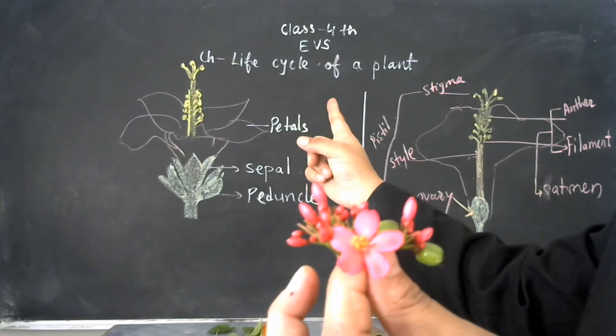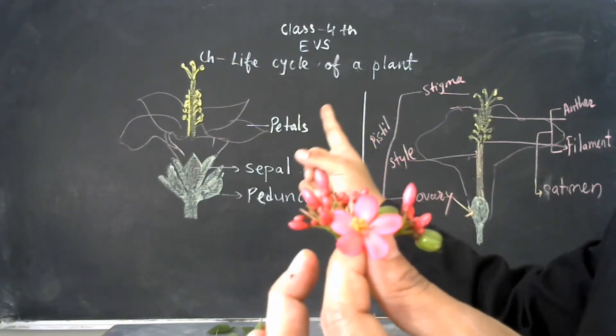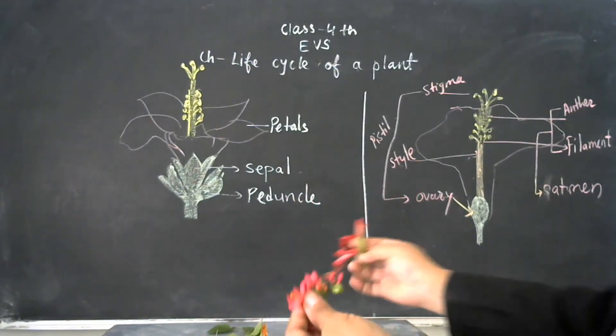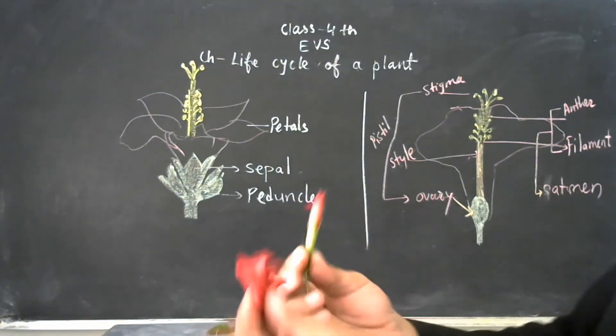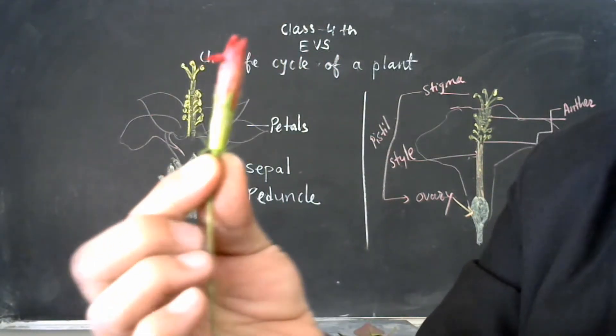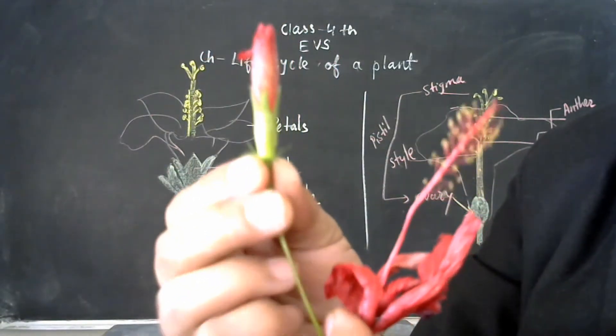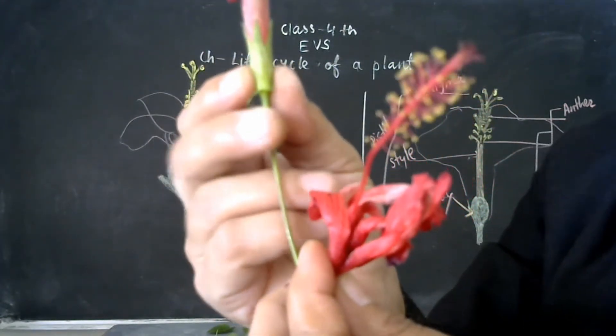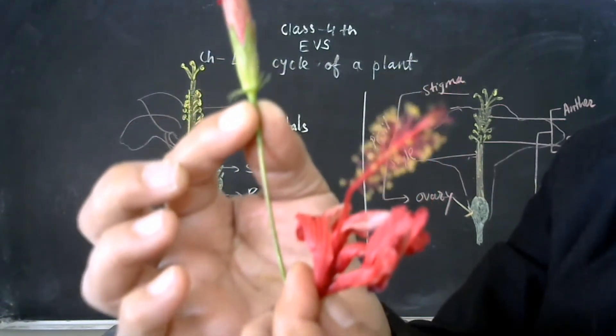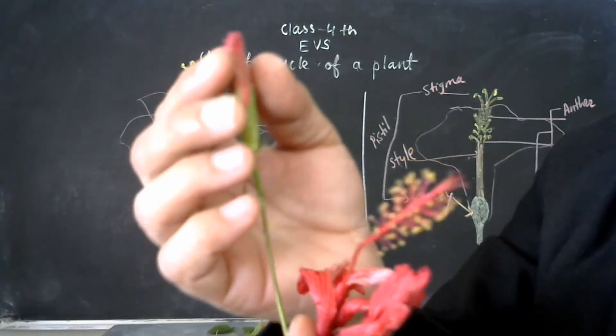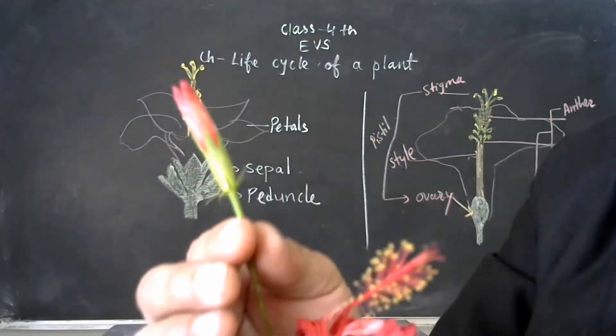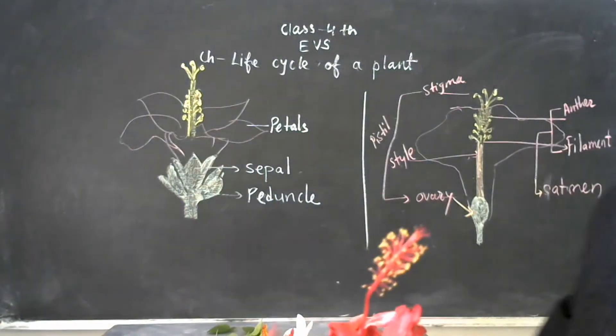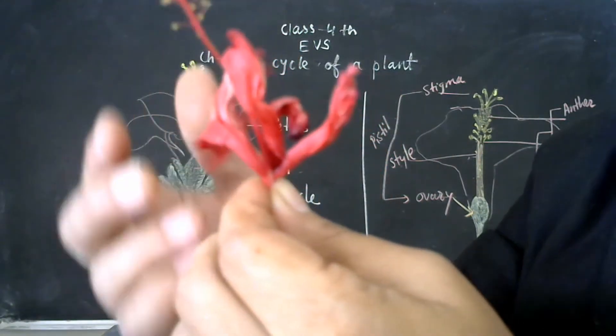I am going to show you the structure of this hibiscus flower. All of you know the plant of hibiscus. Here, you can see the bud. You can see this bud is covered with this green color sepals. You can also see the peduncle here. And here, the petals. Now this is a baby flower, so all petals are closed.